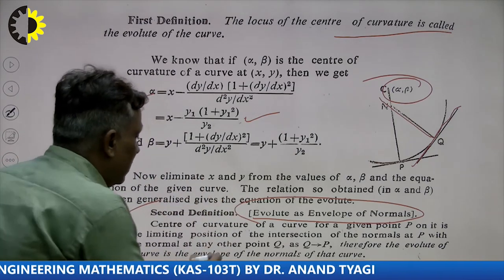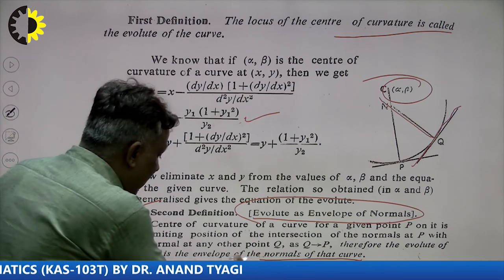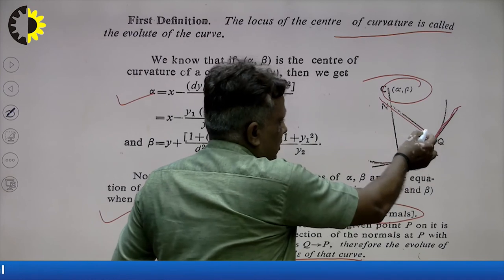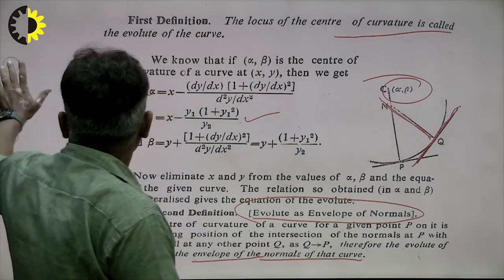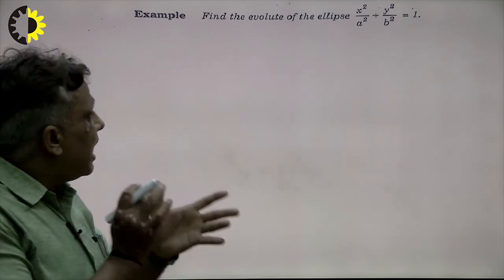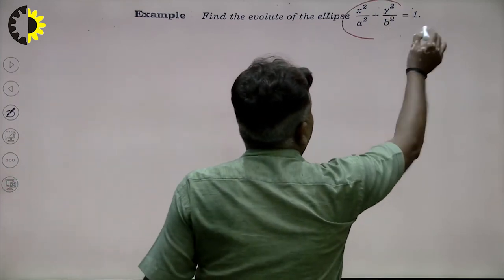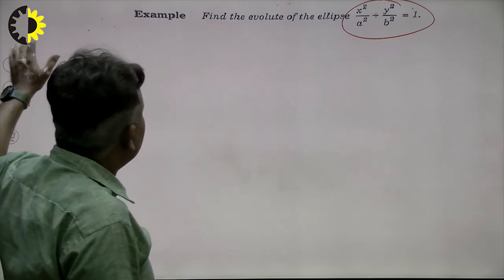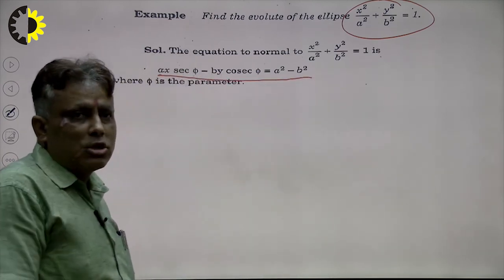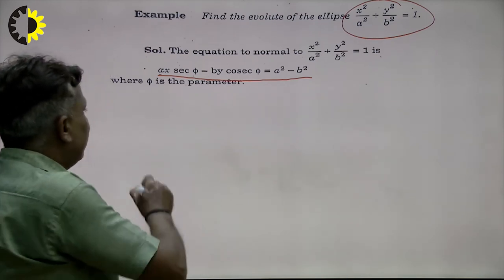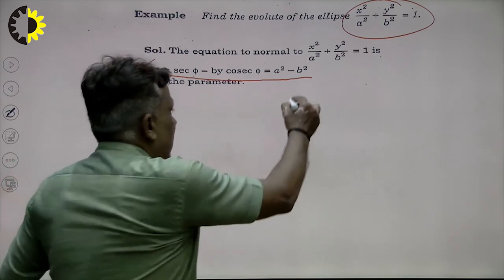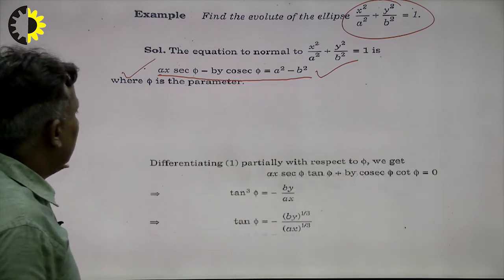Students keep in mind: if our aim is to calculate the evolute of the curve, first we find the normal equation of the curve, and after this we find the envelope of those normals — the result will be the evolute of the given curve. For the evolute of an ellipse: the normal equation of the ellipse is ax secφ − by cosecφ = a² − b², where φ is the parameter. This is the normal equation; now our aim is to calculate its envelope.